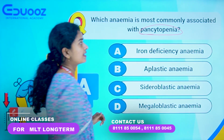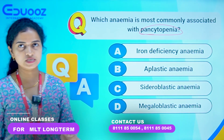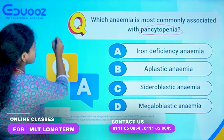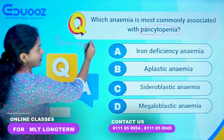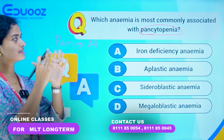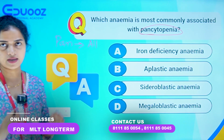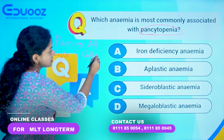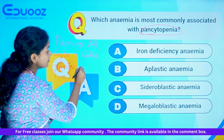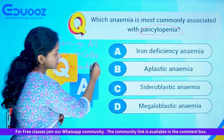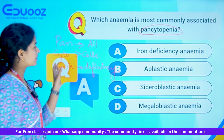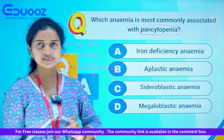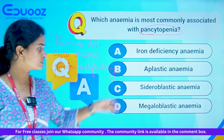Which anemia is associated with pancytopenia? Let's break down the word. Pan means all, cyto means something related to cells, and penia means deficiency. So pancytopenia means deficiency of all cells.